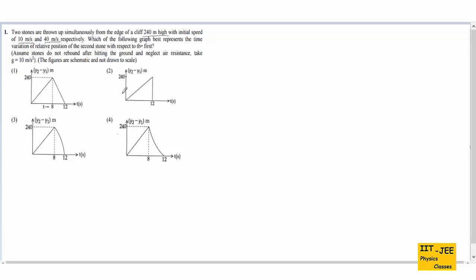Four graphs are given between y2 minus y1 versus time, where y2 and y1 are the positions of the second and first stone respectively. So y2 minus y1 is the relative position of both stones. First, we will find the time taken by both stones to reach the ground, since the graph involves time.